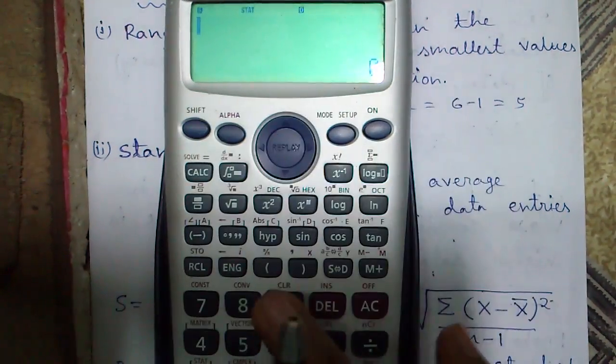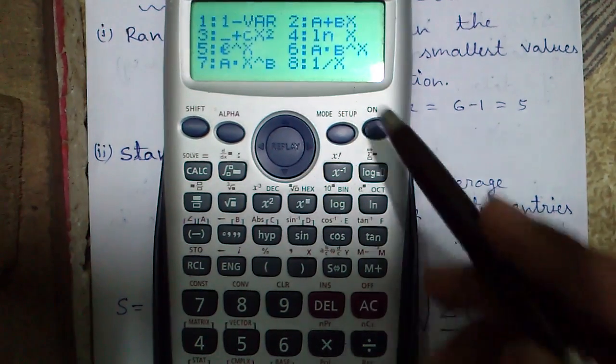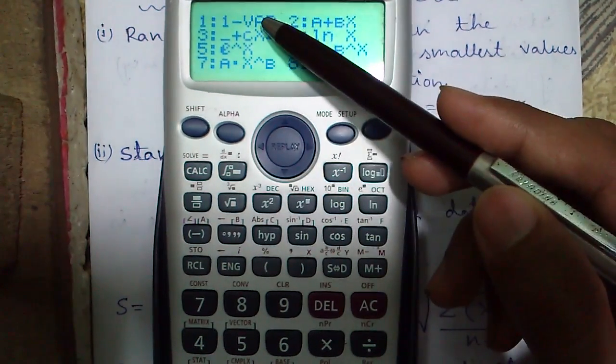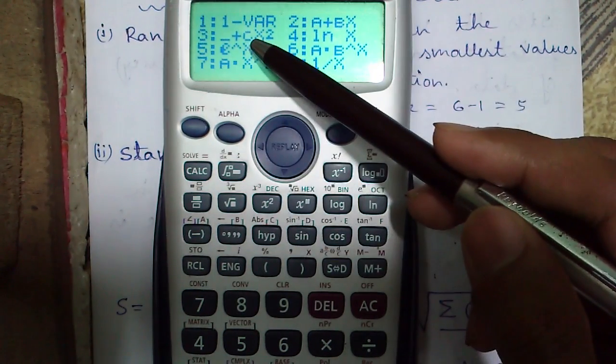Before that, I would like to introduce you with the modes in this calculator. Number 1 is type mode. Here you can change your mode of operation. Number 1 is single variable of statistics. Number 2 is dual variable or linear regression. Number 3 is the quadratic regression. Number 4 logarithmic regression.